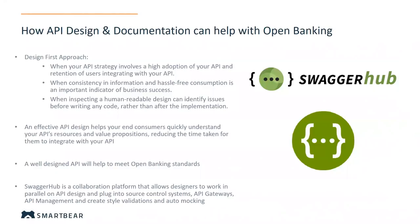If you have a good API design or a well-defined API definition, the consumers of your API will very quickly be able to understand your API's resources and value propositions, reducing the time it takes for them to integrate. A well-designed API is going to help you meet open banking standards more easily, because you can define the rules for your API at a high level and ensure that any developers implementing or testers testing the API know exactly what standards need to be met. And if you haven't used Swagger or SwaggerHub before, your API definition provides auto-generated documentation, which is very easy for developers to understand and start working with your exposed APIs.